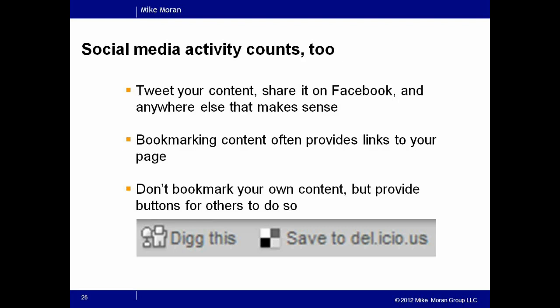Social media activity counts a lot. To get social activity, you should be tweeting your content and sharing it — but how do you get other people to do it? A simple and free way is to put social bookmarking buttons on your site so that people can tweet things, dig them, save them to Delicious, or use any of these sharing buttons to share your content. That will get a lot of social media activity going around your content if it's high quality — and that's really the key. It has to be high quality content for these strategies to work. And creating high quality content is free also.